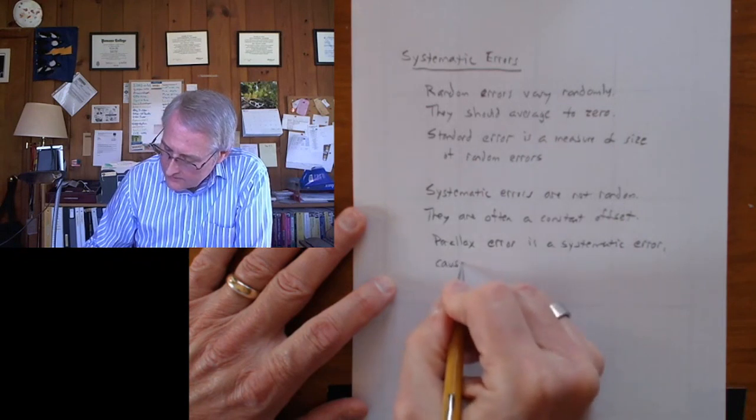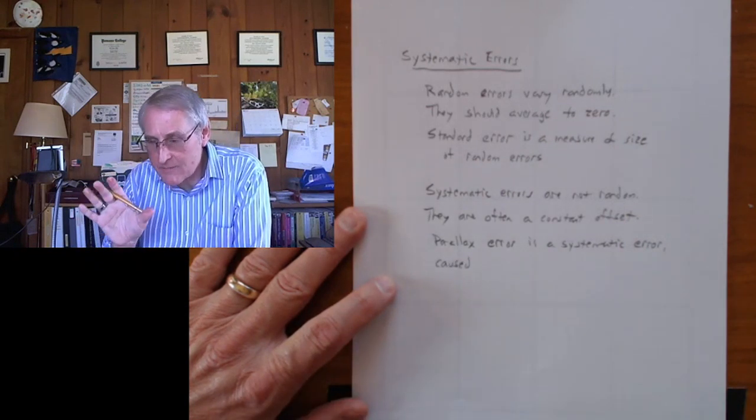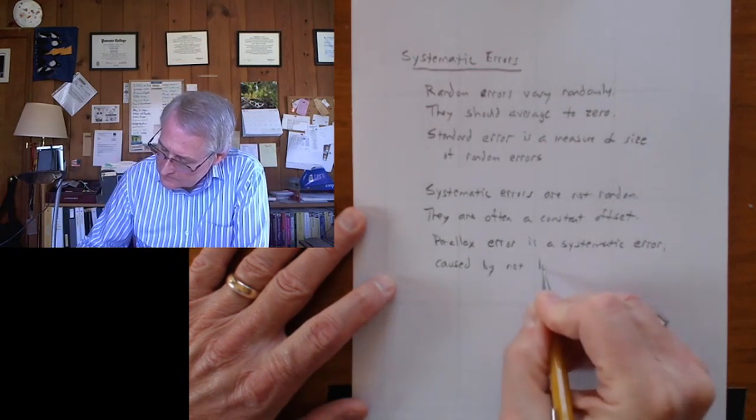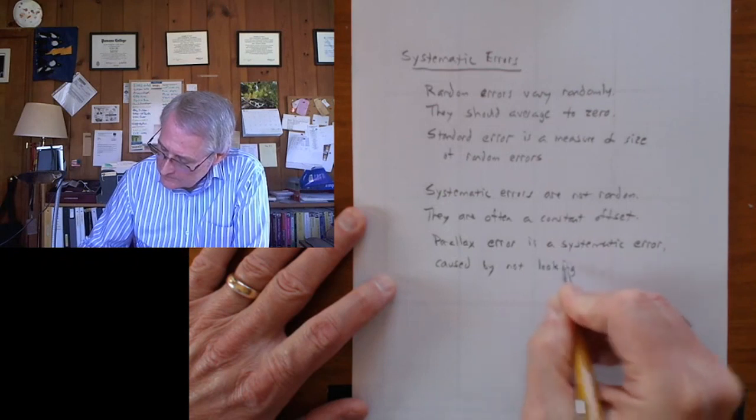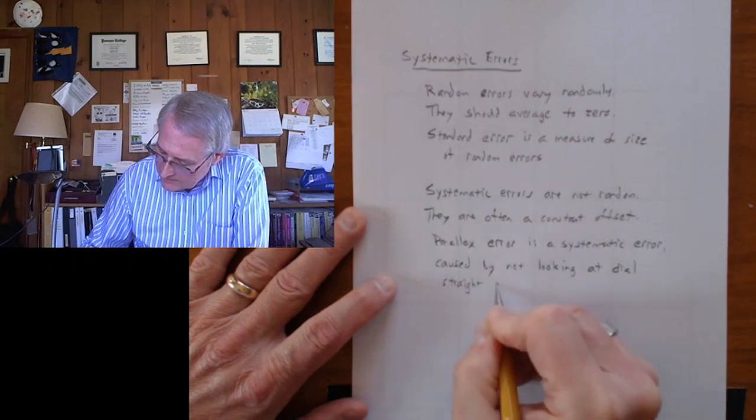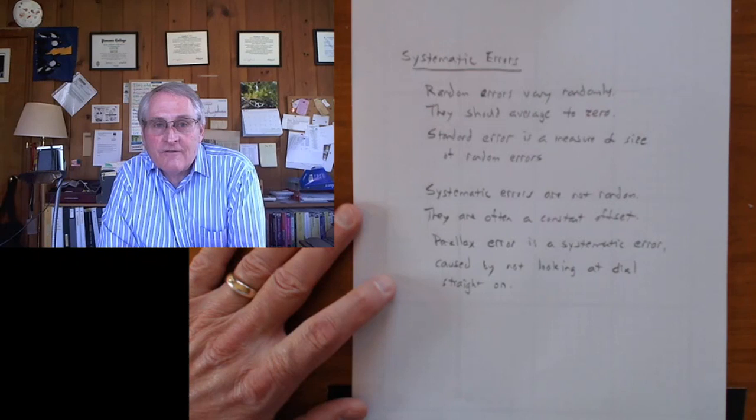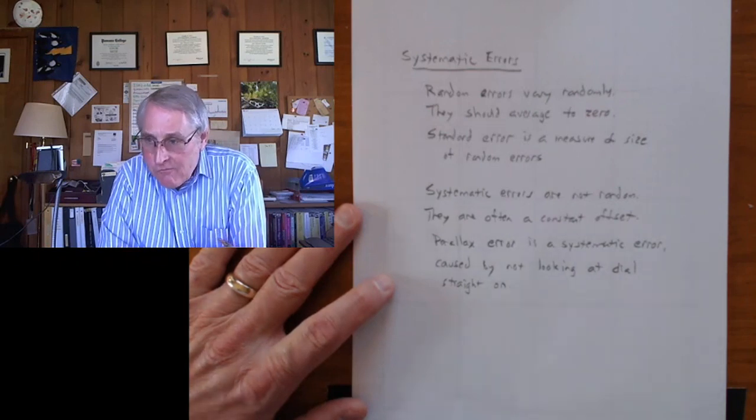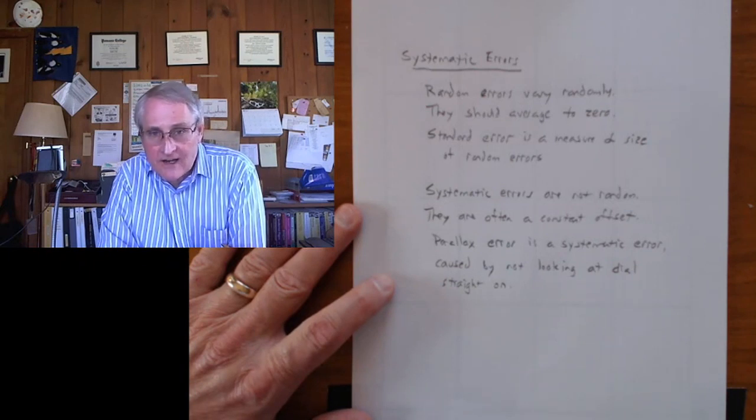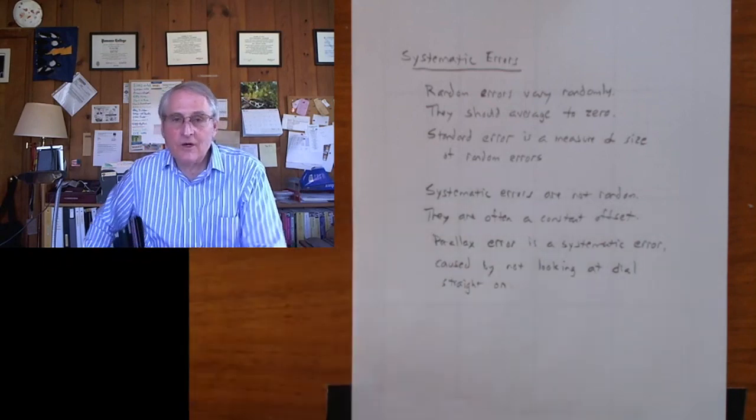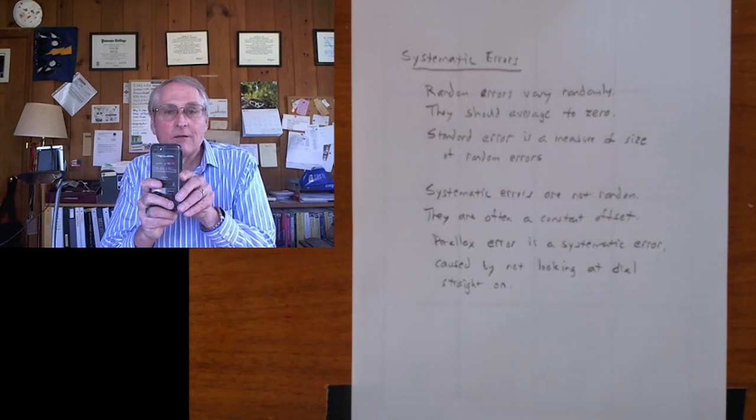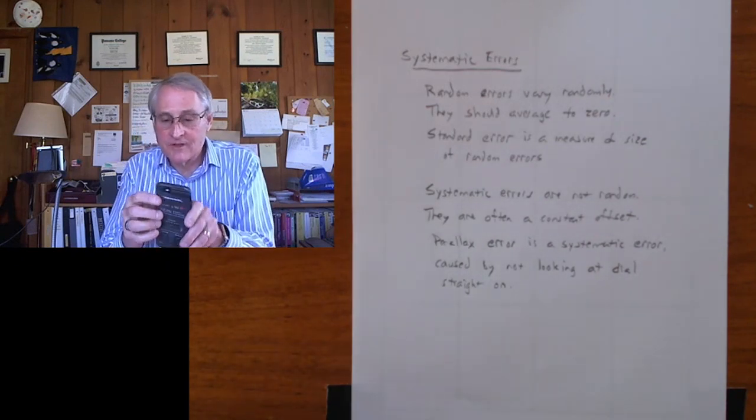And it's caused by not viewing the dial or the measuring scale or whatever you're looking at straight on. In this lab, I took some photos of the voltmeter to give you data. I also looked at the voltmeter and I read out what I thought the voltage was. And I made a point of looking at the dial straight on. But what I noticed was that after I took the photos they seemed to not agree. And I think the problem is that when you hold your phone up to make a measurement, especially if it's this way, the camera's over here.